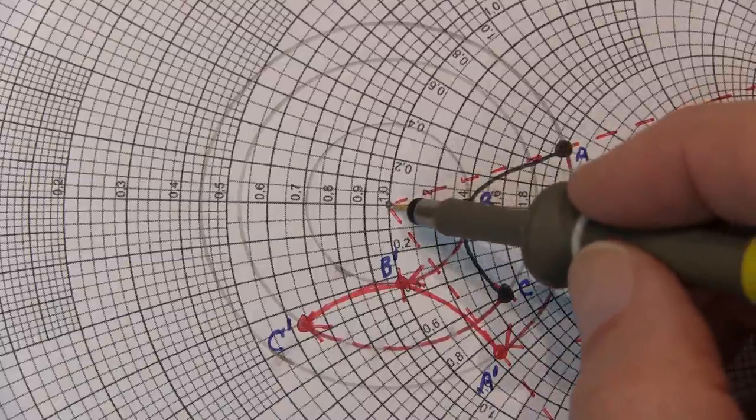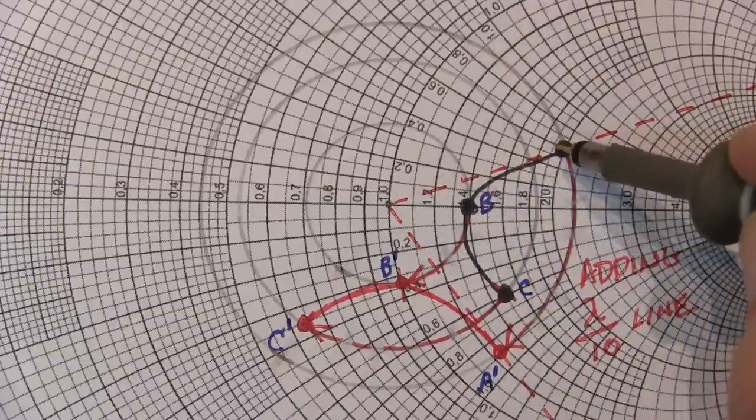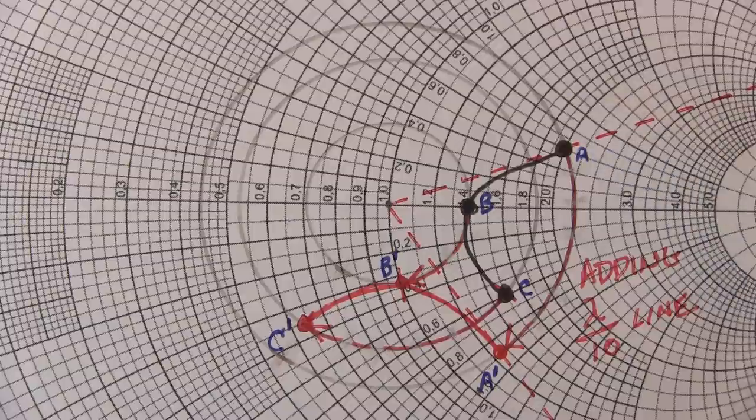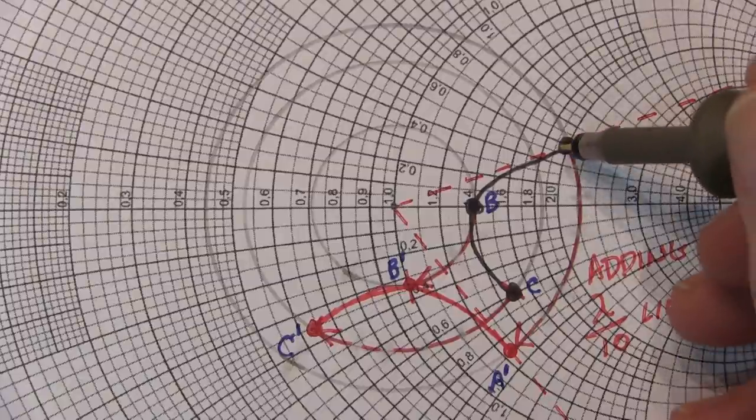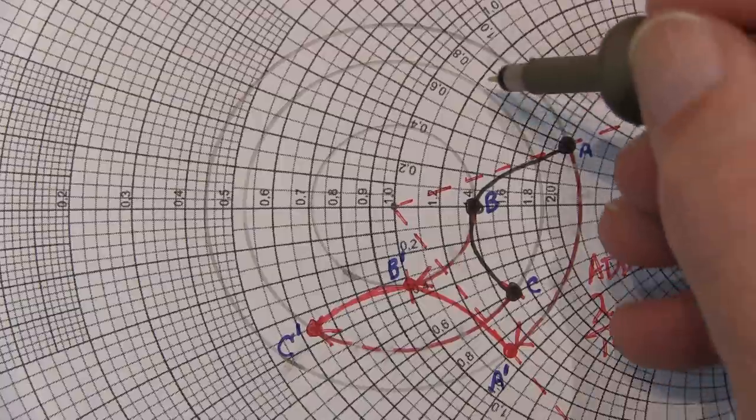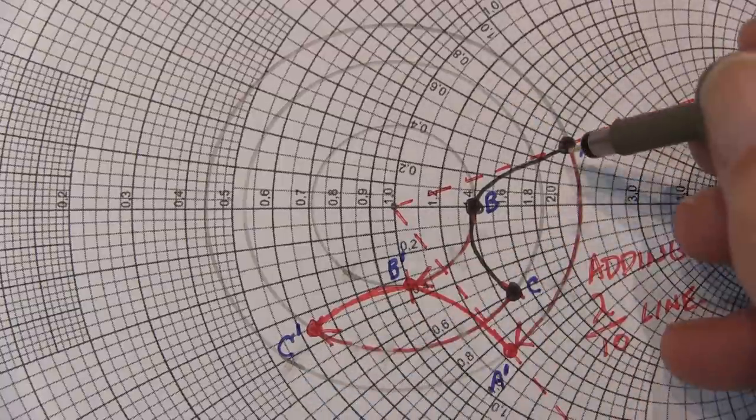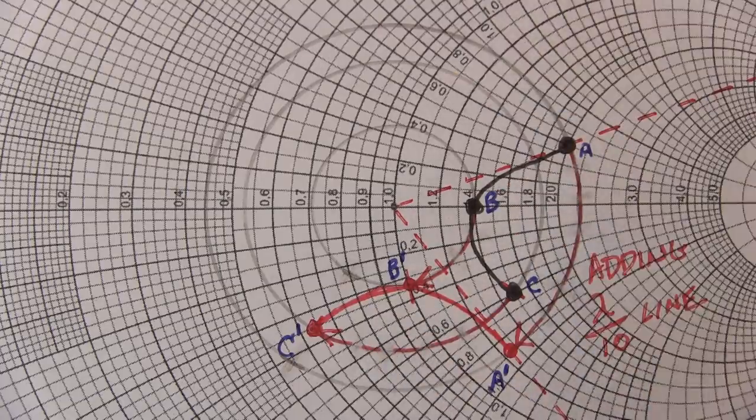So if we take our original three points and this curve of our original sweep of the antenna, we essentially can draw these imaginary circles centered at the Z0 point for each of those points. These circles are known as constant SWR circles. So as we add or subtract line length, the impedance represented by any point on the curve rotates around its own constant SWR circle. When we add line length, we rotate clockwise. When we subtract line length, we rotate counterclockwise.